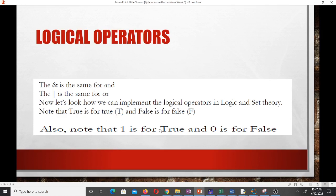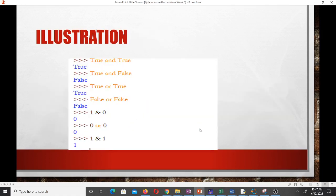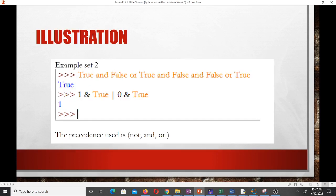Also note that 1 is for true and 0 is for false. Here, when we do true and true, it gives us true. True and false gives us false. Like I told you, 1 is the same as true and 0 is false. The ampersand is the same as AND. That is the logical operators in Python.